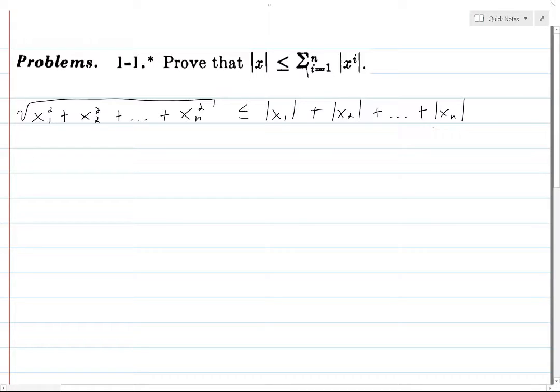We could also write x₁ squared plus all the way up to xₙ squared is less than or equal to the quantity x₁ plus all the way up to xₙ squared.